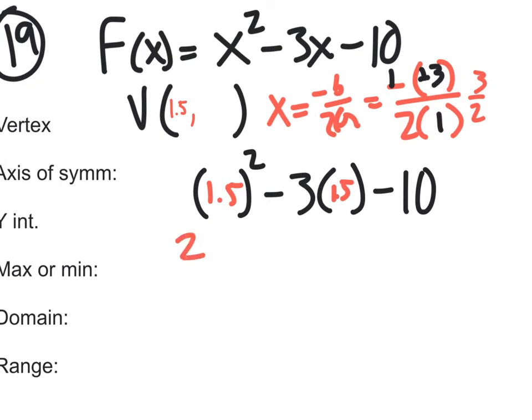So that is 2.25. And how about 3 times 1.5? What is that? 4.5. So we have a minus 4.5, and we also have a minus 10 at the end, right?